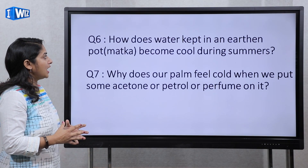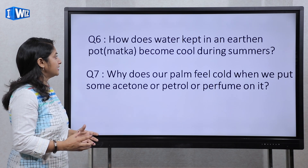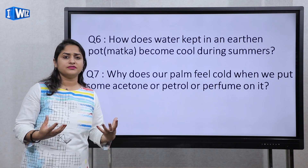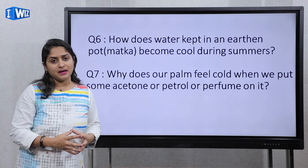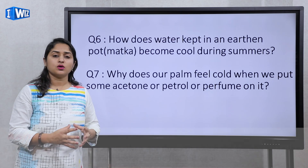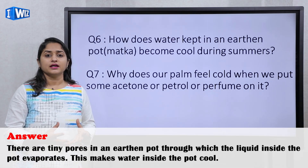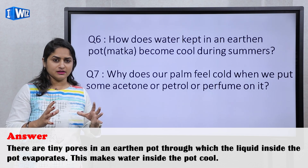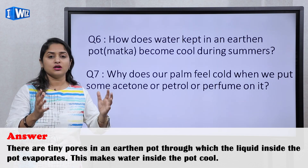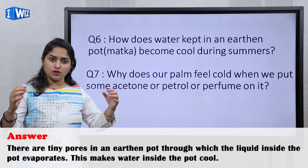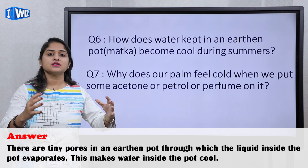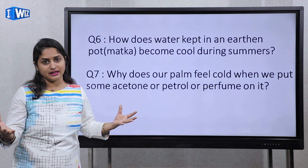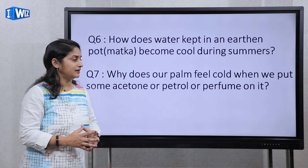Next question: how does water kept in an earthen pot (matka) become cool during summers? We prefer to store water in a matka in summers — you may have seen matkas kept on roadsides. If you notice, the outside of the matka becomes wet. The water molecules on the surface absorb outside heat and evaporate, keeping the water inside cool.